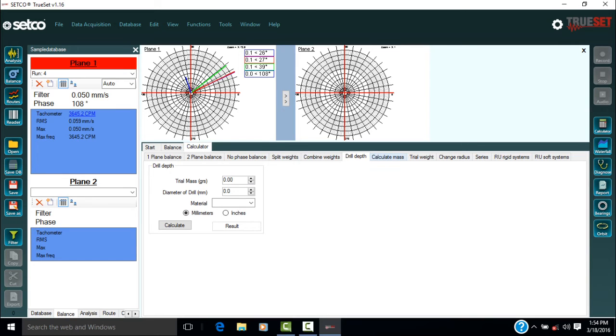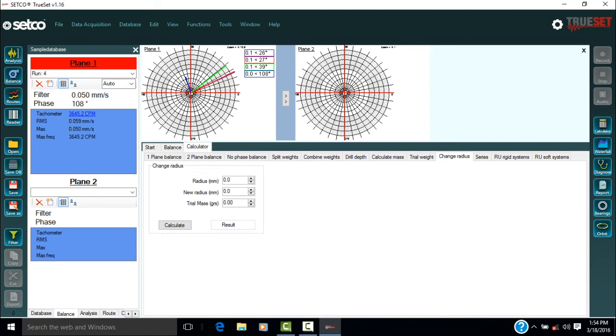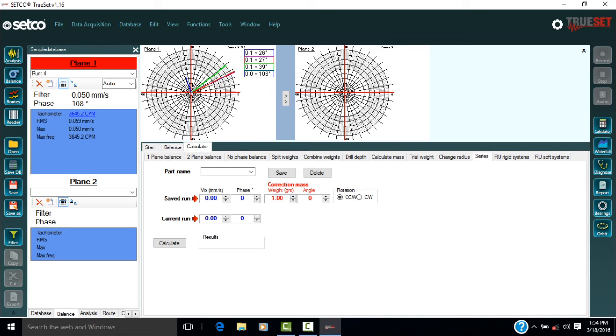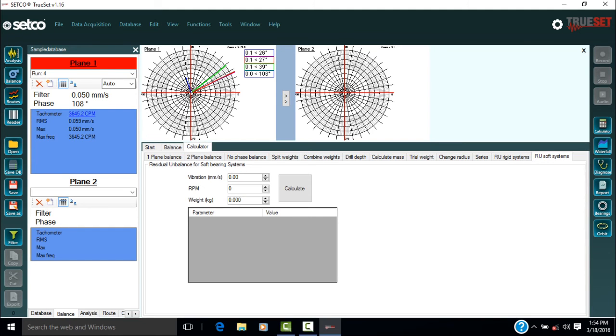Calculate mass is used to calculate the size of the weight being applied. The trial weight is used to calculate the trial mass. Next is the change radius tab. This calculates the trial mass on a different radius. The series tab is used when balancing without a trial mass. The RU rigid systems tab is for residual unbalance of a rigid system. The RU soft systems tab is for residual unbalance of a soft system.